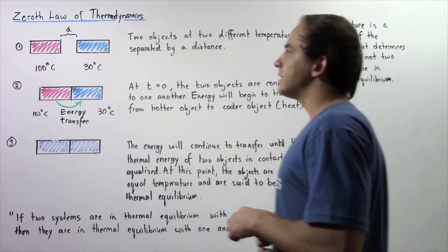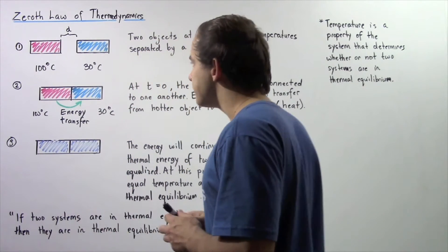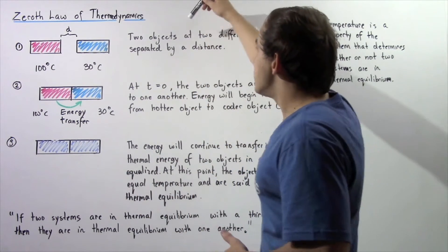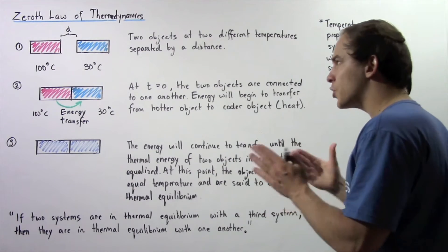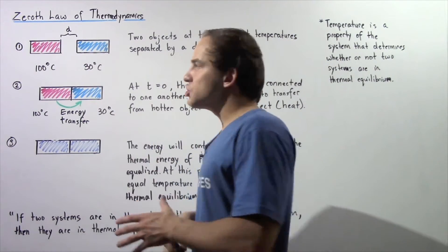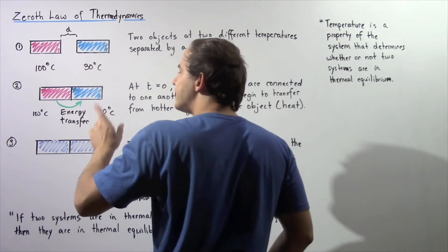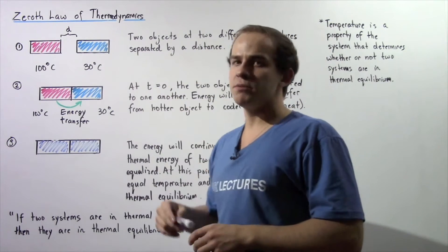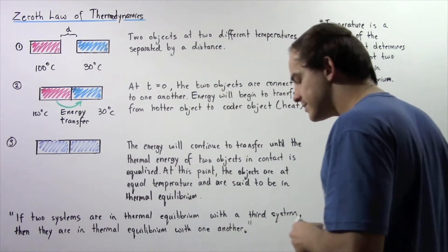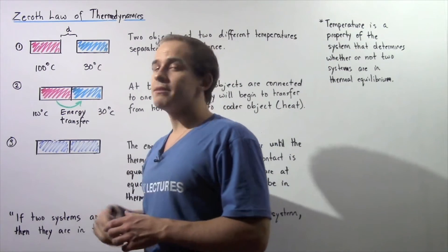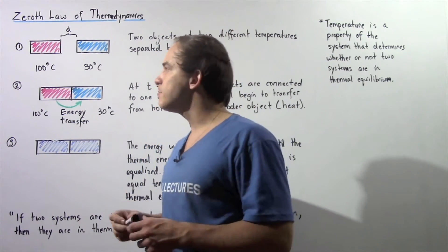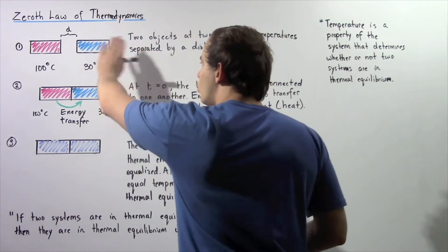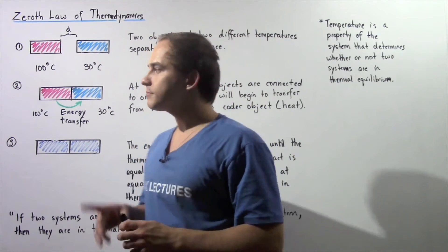Let's begin by looking at diagram number one. Let's suppose that we have two different systems or two different objects that are at two different temperatures separated by a distance d. We have system number one, shown in red, at 100 degrees Celsius, and system number two, shown in blue, at 30 degrees Celsius. Because system number one has a greater temperature, it has more thermal energy than system number two.